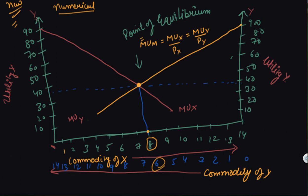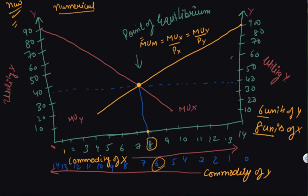In this graphical example we have six units of Y and eight units of X as the equilibrium point. This is how consumer equilibrium is determined in the case of two commodities. I hope you liked the video — please download our app, Scholars Learning, and if you have already downloaded it, enjoy the learning experience.